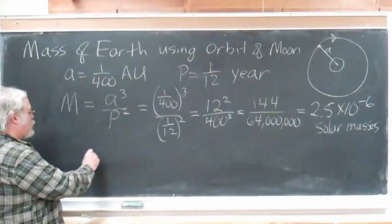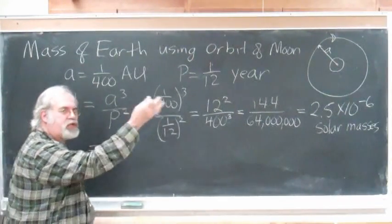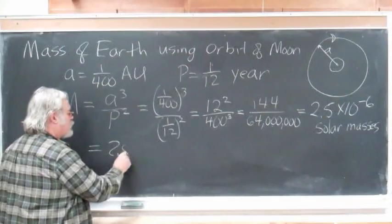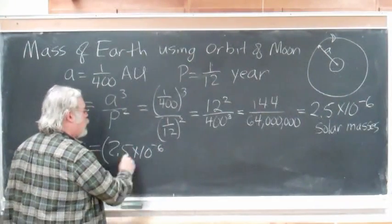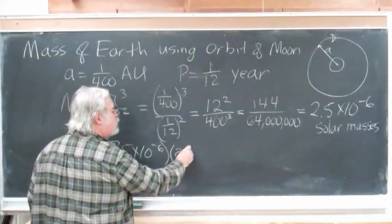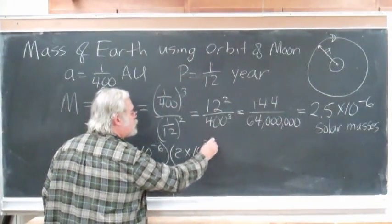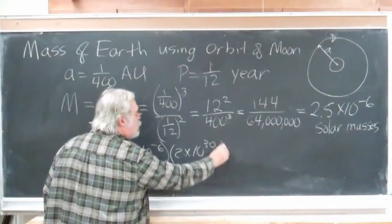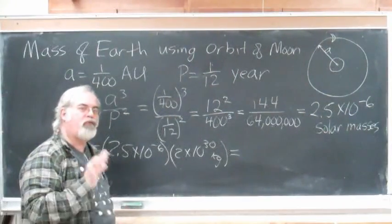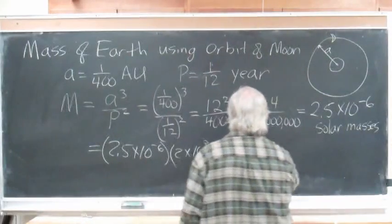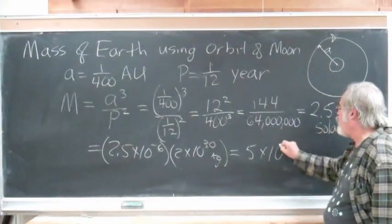But what is that really in terms of something like kilograms? Well, I would multiply this by the mass of the Sun, because this is in units of mass of the Sun. So, the mass of the Earth then is equal to, if I take 2.5 times 10 to the minus 6 and multiply the mass of the Sun, which is 2 times 10 to the 30th kilograms, I get an answer of just about 5 times 10 to the 24th kilograms.